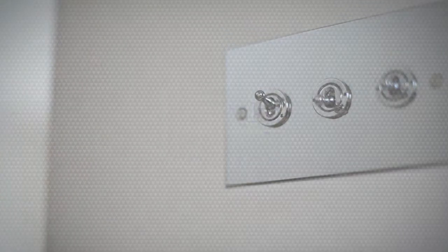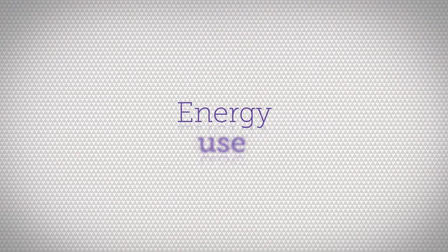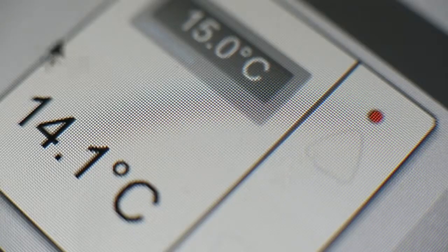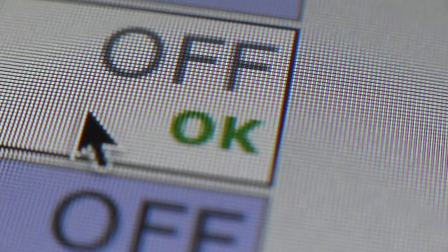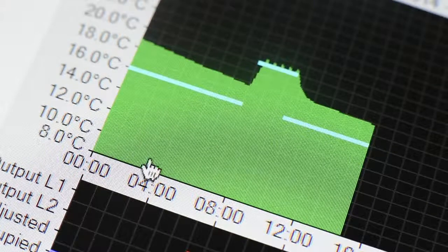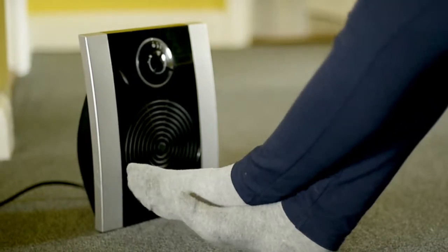With Prefect IRIS you take control of energy use and therefore energy costs. Prefect IRIS controls temperature individually in each room, switches heating on and off at predetermined times, measures energy use, turns heating down if windows are open, detects unoccupied rooms and unauthorised portable heaters.